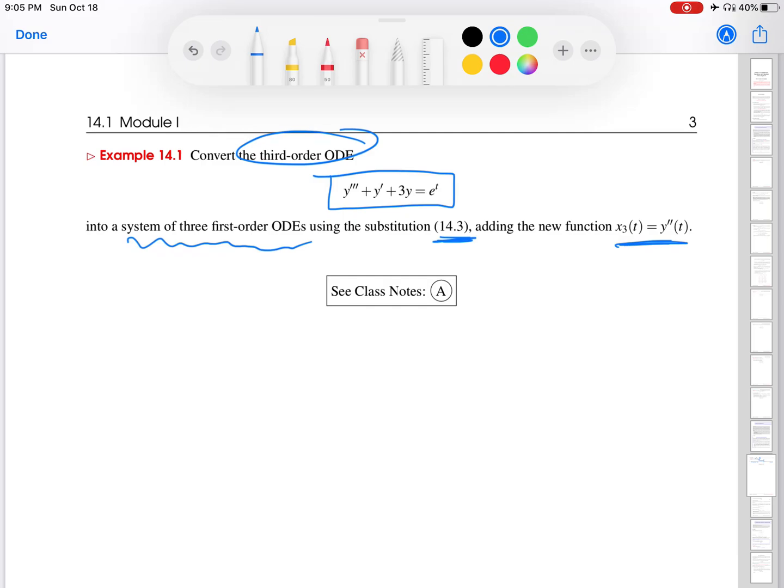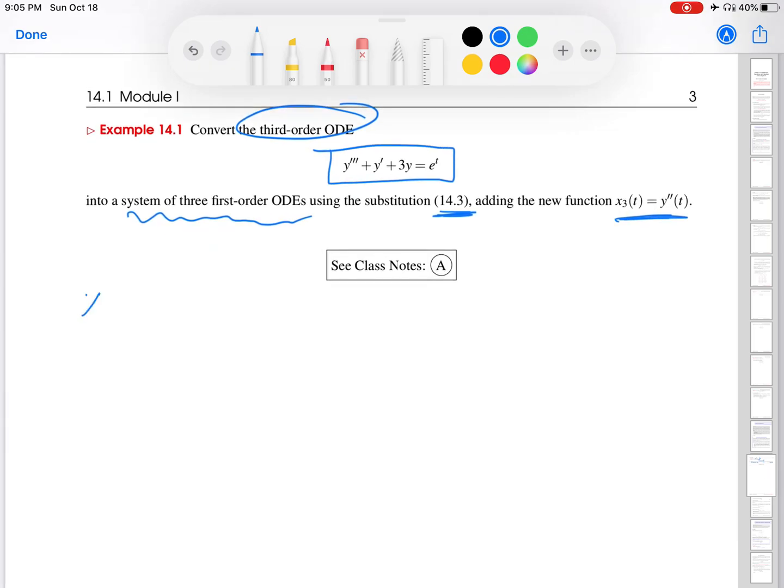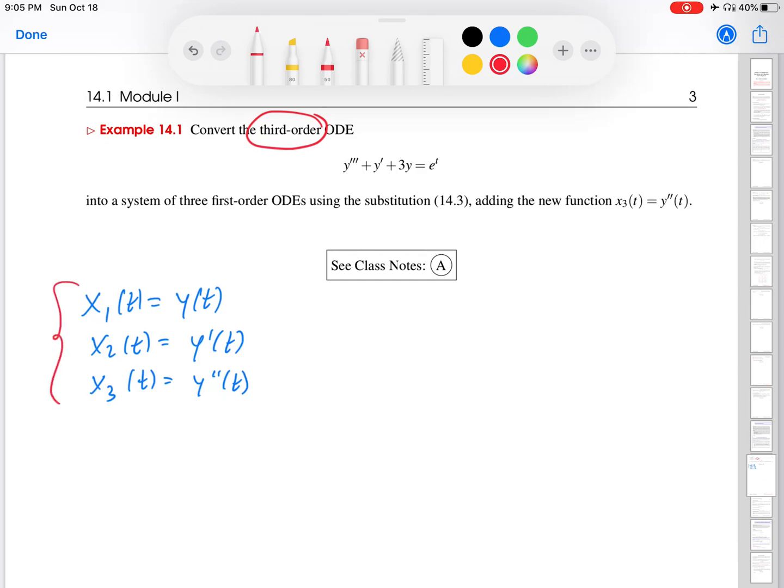Let me just remind you what that substitution was. It was introducing x1 equals y, x2 equals y prime, and then this new one x3 equals y double prime. And I'll say a quick thing, you probably have noticed the pattern in this substitution. I am working here with a third order ODE and I have three new x variables and what I'm doing is x1 is always y and then I just start differentiating y prime, y double prime.